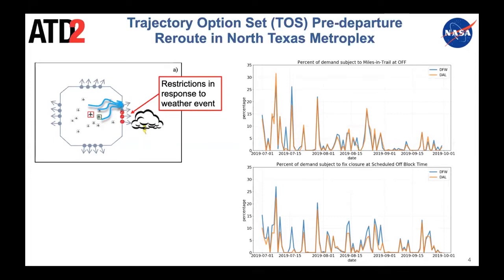In addition to fix closures, ATC typically puts some type of miles in trail, which requires increased separation at the departure fix. On the right hand side, we show data on how often this happens: the top graph shows the percent of departure demand subject to miles in trail at the off event, and the bottom shows the percentage subject to a fix closure at their scheduled off block time. The two major airports in North Texas are DFW and Dallas Love, plotted in blue and orange respectively. Some days, 20 to 25% of traffic can be subject to these restrictions.